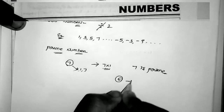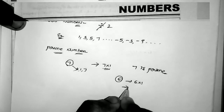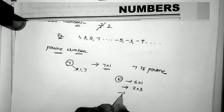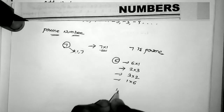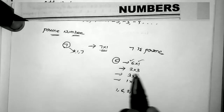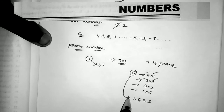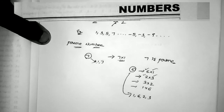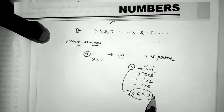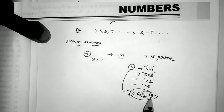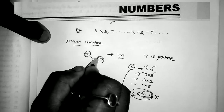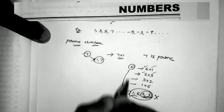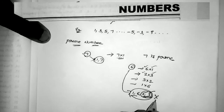For example, take the number 6. We can write 6 as 6 into 1, or 2 into 3, or 3 into 2, or 1 into 6 — four possibilities. So the factors of 6 are 1, 6, 2, and 3. Since it has extra factors 2 and 3 besides 1 and itself, 6 is not a prime number. For 11, the factors are only 1 and 11 — so 11 is a prime number. For 10, we can write it as 2 into 5, so 10 is not a prime number. The number having only factors 1 and itself is called a prime number.